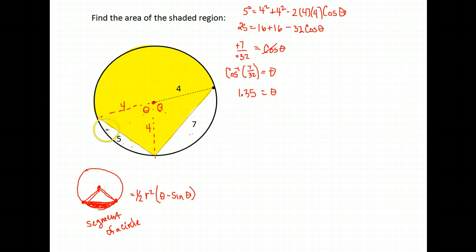So the area of this segment here I could find by doing one-half r squared times—here's the formula I'm using for the area of a segment of a circle—theta 1.35 minus the sine of theta. Again, make sure your calculator is in radian mode when you calculate this. And the radius of my circle is 4, so I'm going to put a 4 right there. So I have one-half times 4 squared.